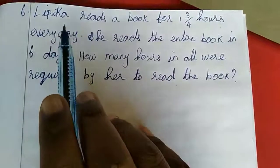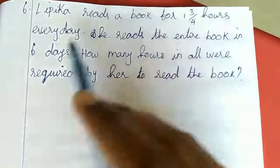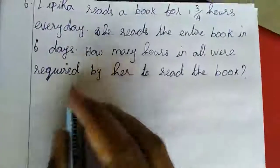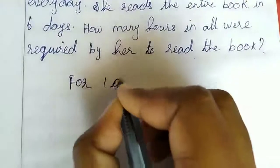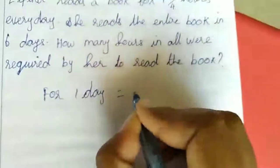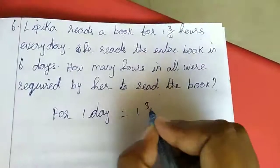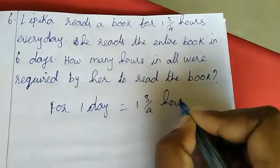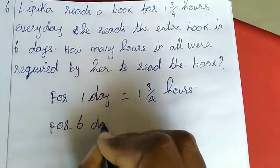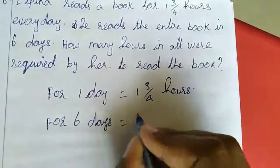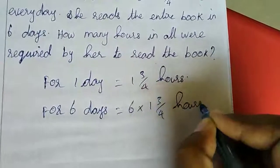For one day she read 1 and 3 by 4 hours. That means 6 days is how many hours? For one day equal to 1 and 3 by 4 hours. For 6 days equal to 6 into 1 and 3 by 4 hours.